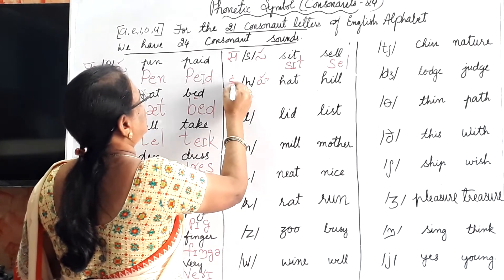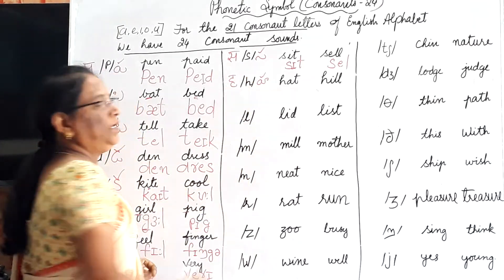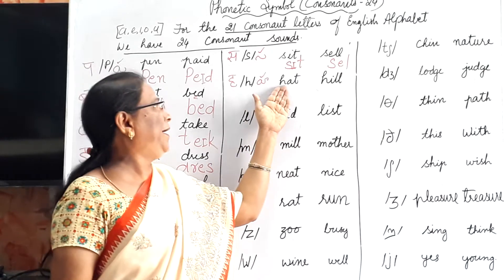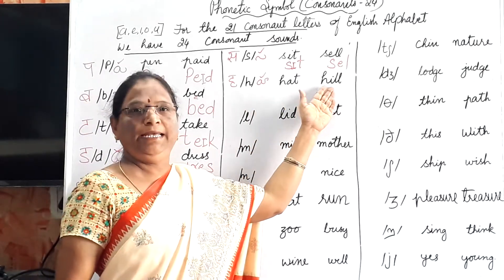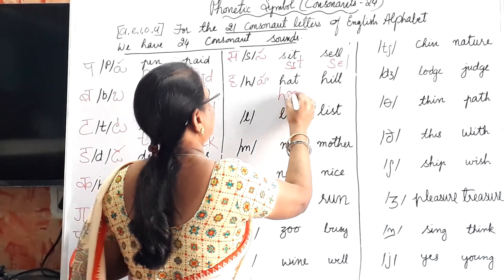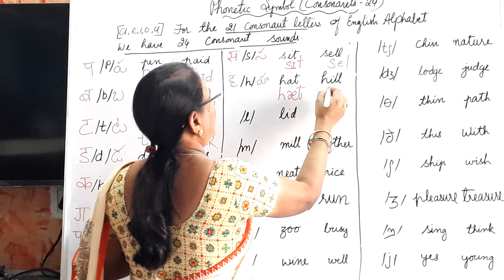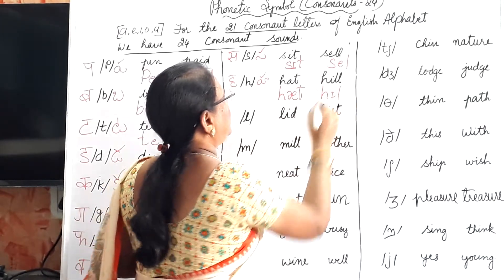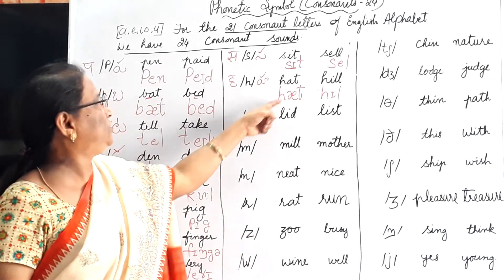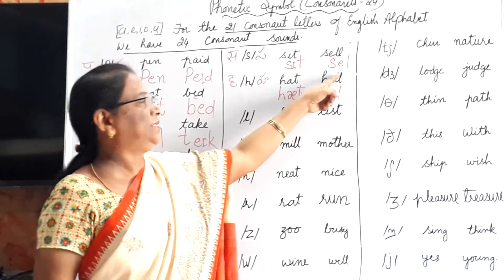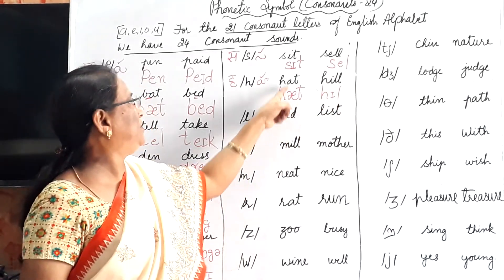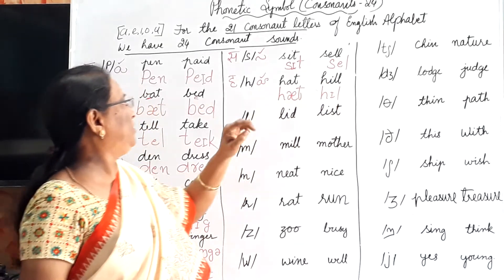H gives the /h/ sound. Hat, hill. H is H, T is T, H is H, L is L — the change is only with the vowel letters. Hat, hill.